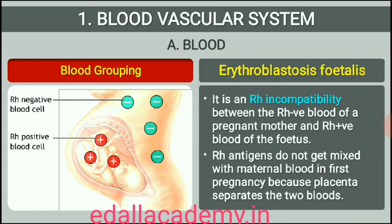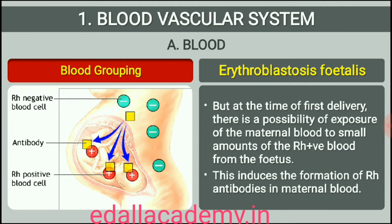A special case of Rh incompatibility has been observed between the Rh negative blood of a pregnant mother with Rh positive blood of the fetus. Rh antigens of the fetus do not get exposed to the Rh negative blood of the mother in the first pregnancy as the two bloods are well separated by the placenta. However, during the delivery of the first child, there is a possibility of exposure of the maternal blood to small amounts of the Rh positive blood from the fetus.